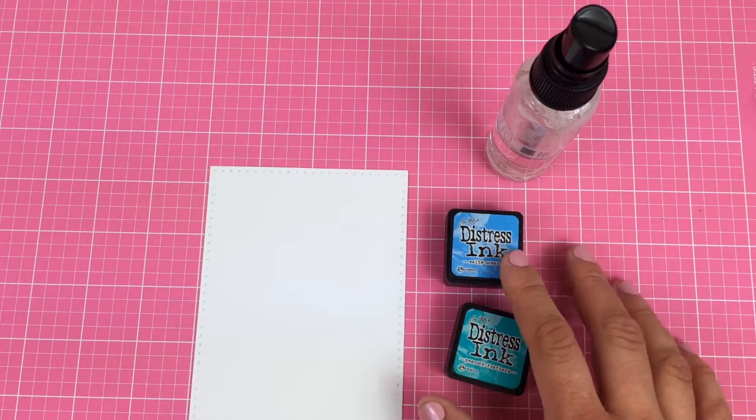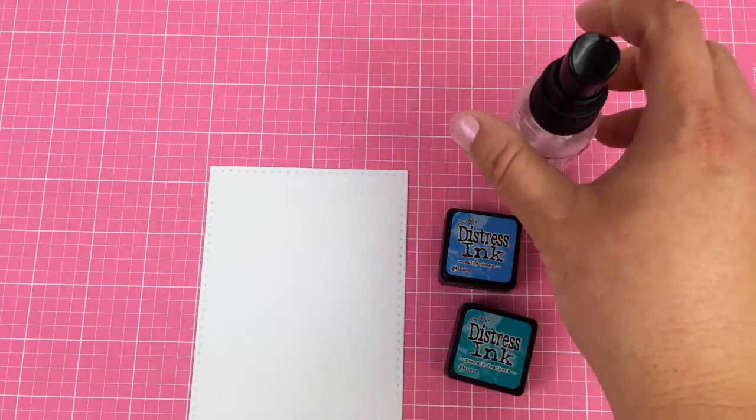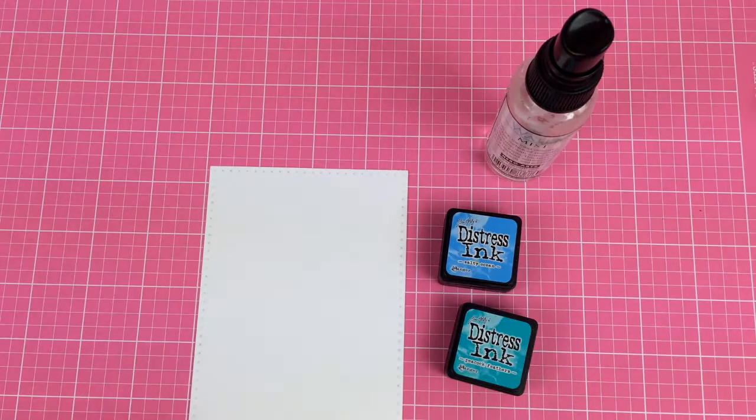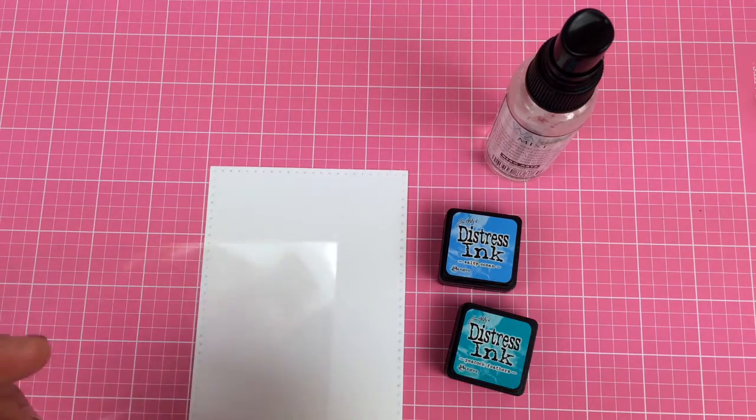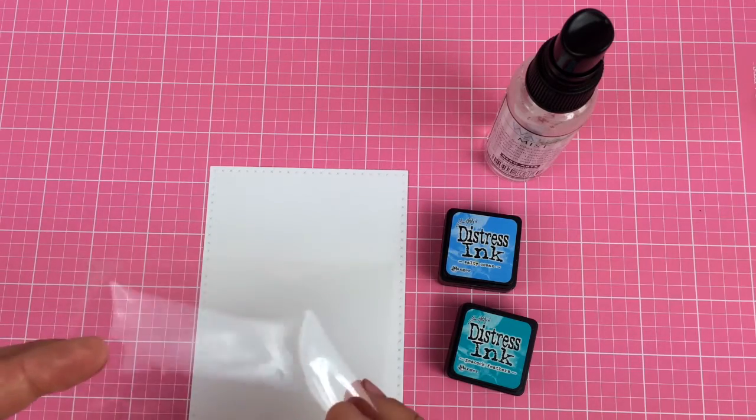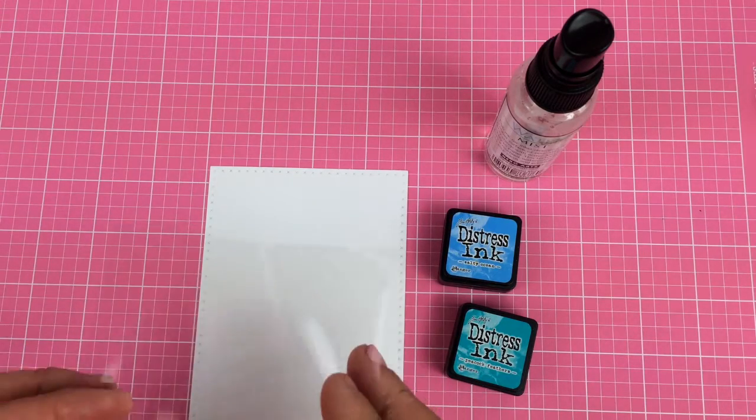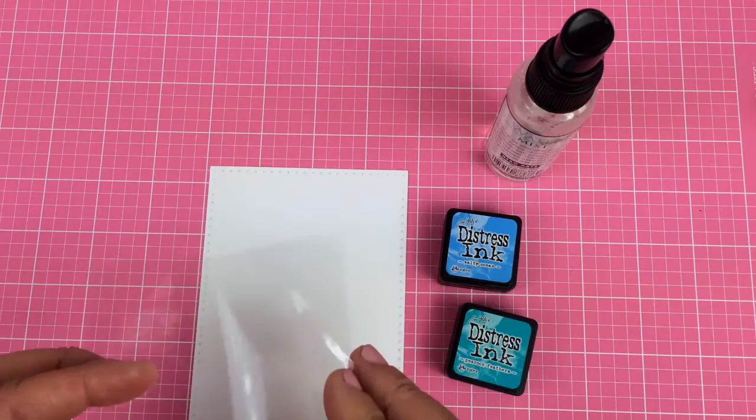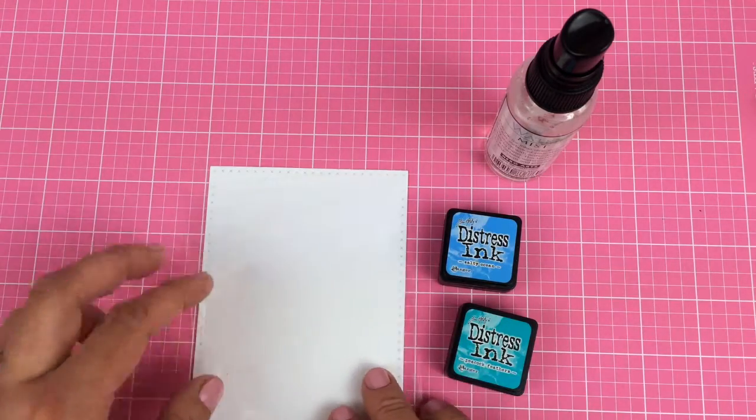I have Peacock Feathers and Salty Ocean, and also a bottle full of water. All you're going to do is take a piece of plastic - this is just package recycling, very thin. I think the thinner the acetate the better, but you could try whatever you have.